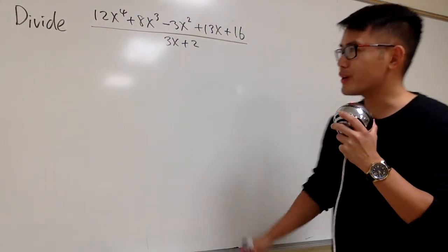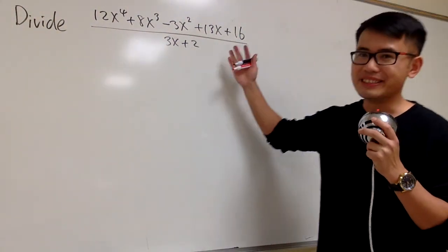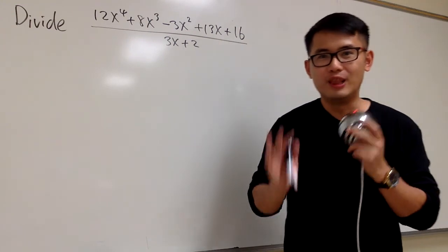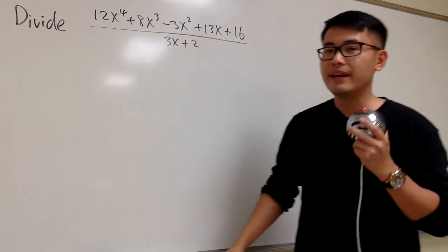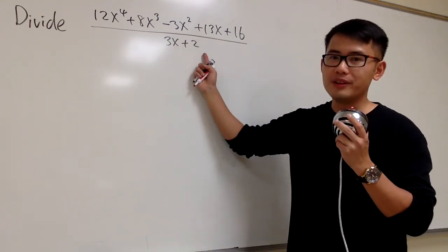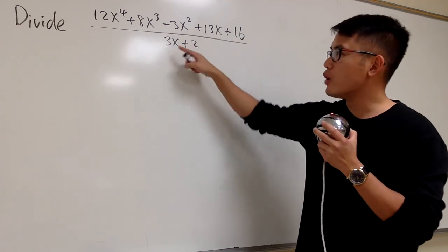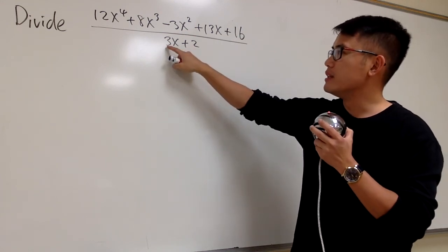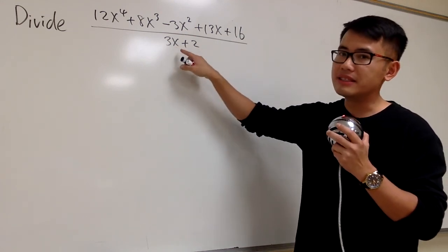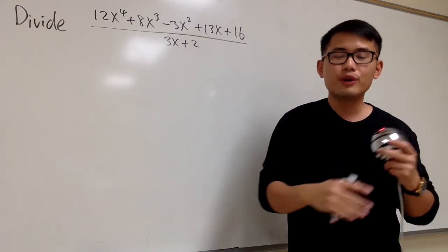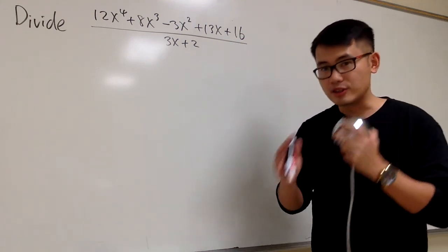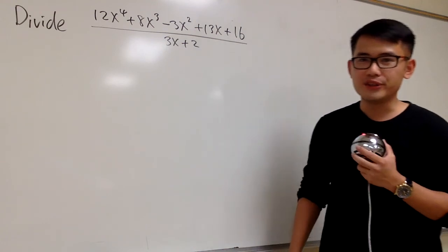In this question, we are going to divide this out, and the way to do this is we are going to use long division. The reason is because we have the binomial in the denominator, and also this is 3x plus 2. This is not x plus a number or x minus a number, so we cannot use synthetic division.